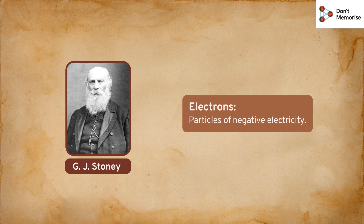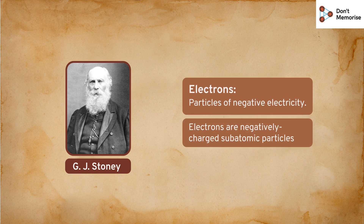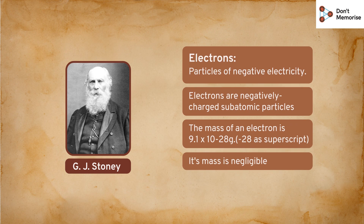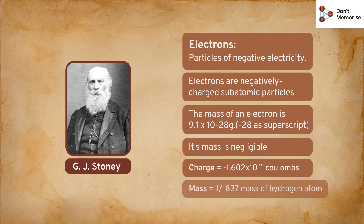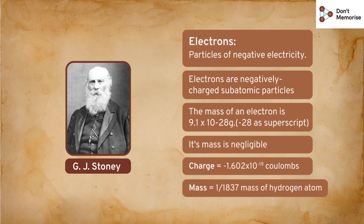These negatively charged particles were later called electrons by GJ Stoney, and that's how electrons were discovered. It was later found that electrons have a unit negative charge of magnitude minus 1.602 × 10⁻¹⁹ coulombs, whereas the mass of one electron is equal to 1/1837 of the hydrogen atom.